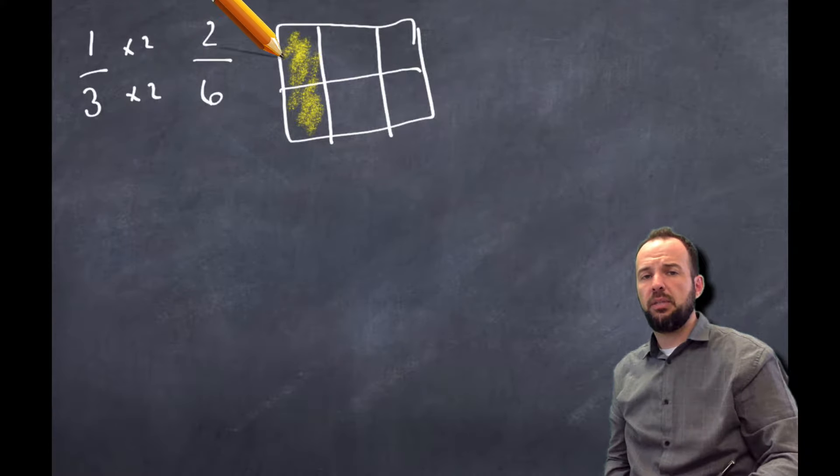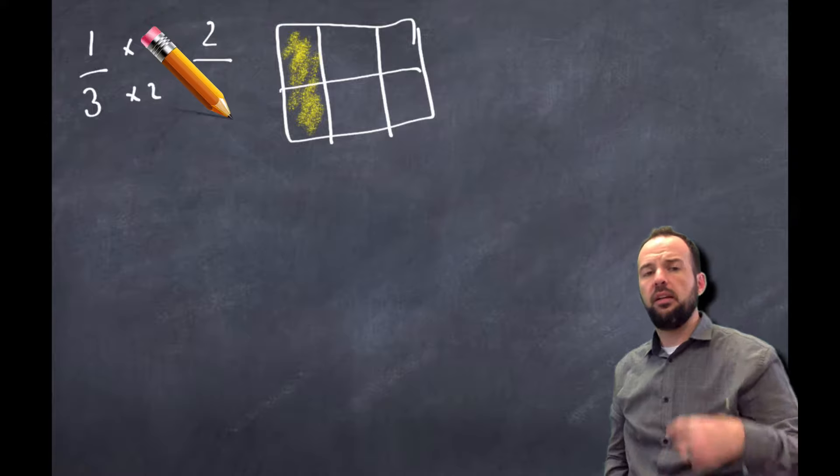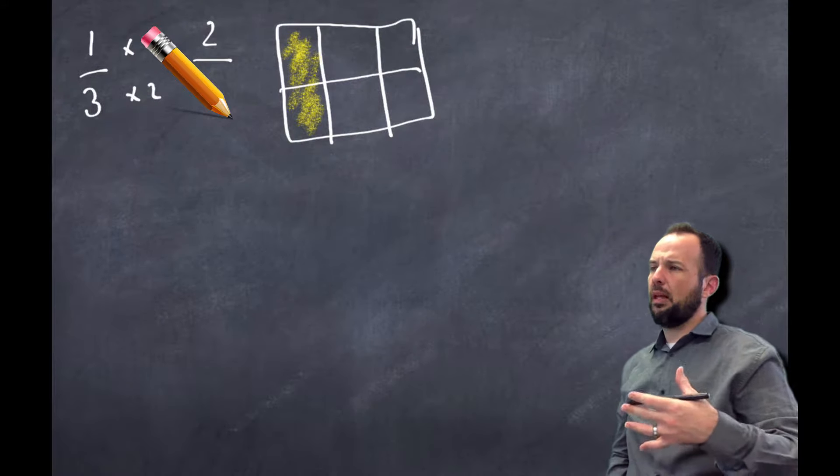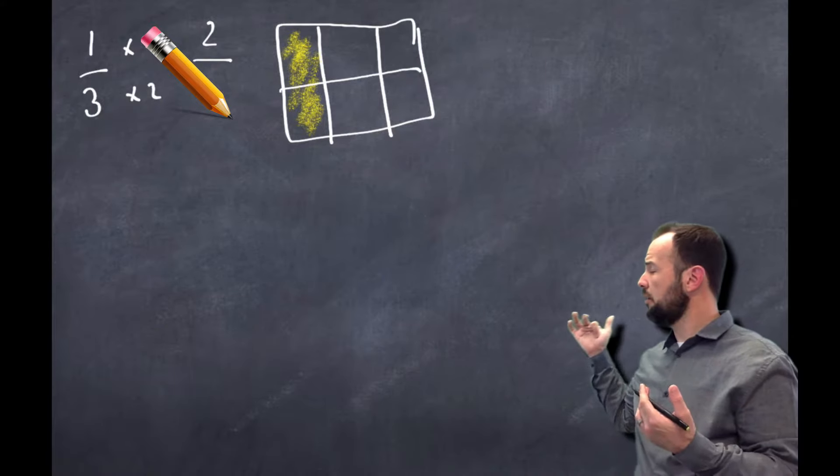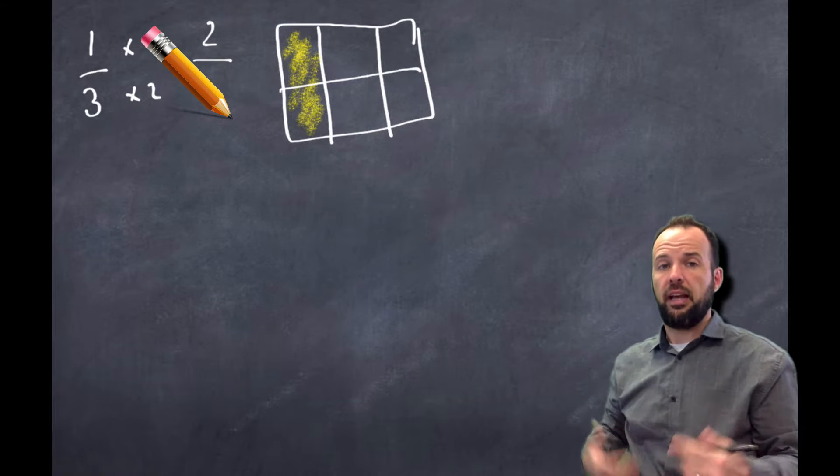I would have one, two, three, four, five, six - six pieces and two of them would be colored in. So we know if we multiply by the same number, we're going to make an equivalent fraction, and we reasoned using the area model, we reasoned to say that, yeah, that's going to be true.